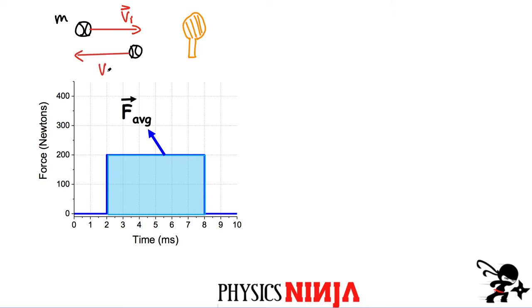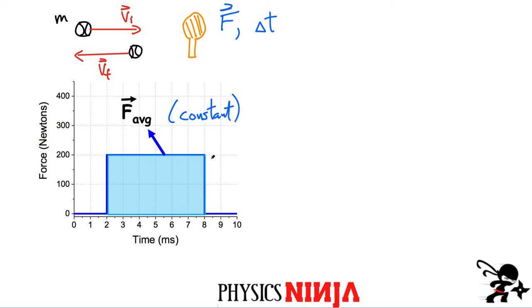The tennis ball after being hit by the racket might move in exactly the opposite direction — some final velocity, the mass hasn't changed. So this tennis racket hit the ball; there was a certain force exerted on the tennis ball from the racket. That force was acting for a little bit of time — not quite instantaneous, maybe a couple milliseconds.